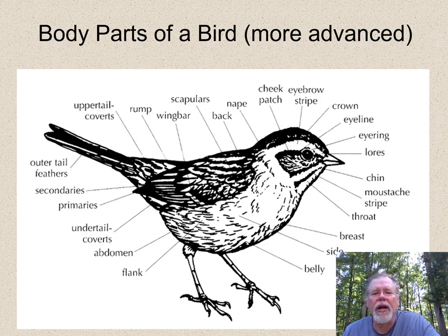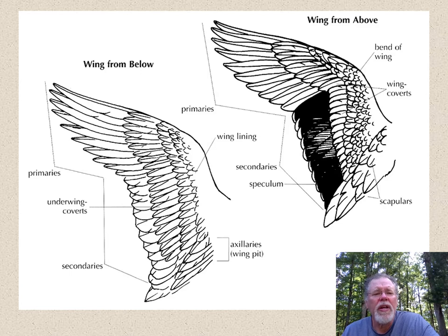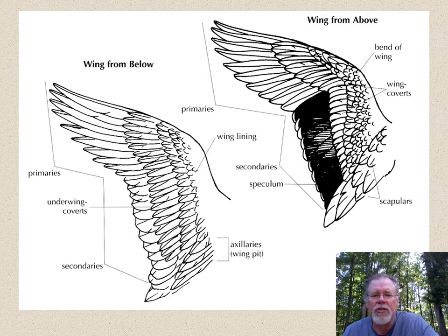We will talk about things like breasts, and mustache stripe — which is also called a malar — and things like that. I'll probably post this somewhere so that you have a copy of it and some idea of what the different parts are. Here's a look at wings. We don't typically talk about secondaries or primaries often. If we ever learn ducks, we might learn about speculum — that patch on the wing that's really dark — because that's one way we can identify ducks, by their speculums.